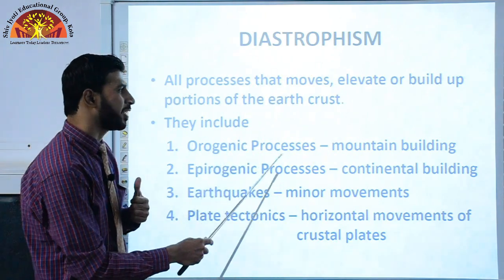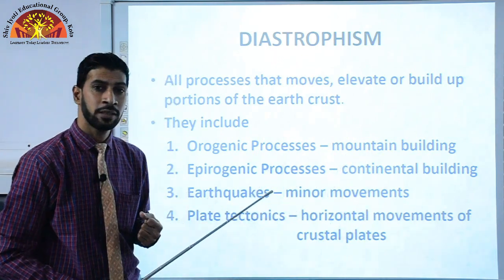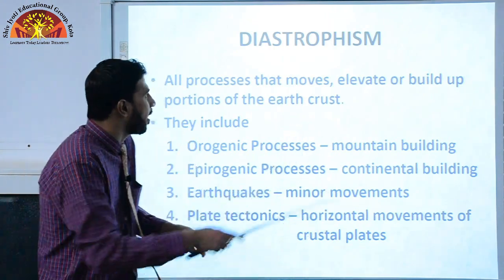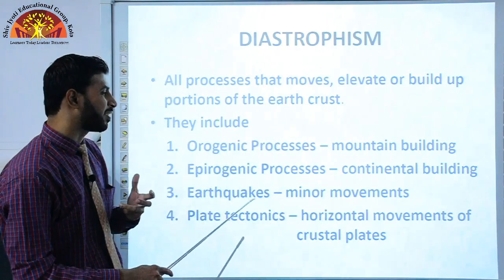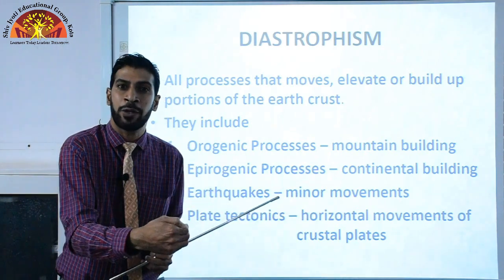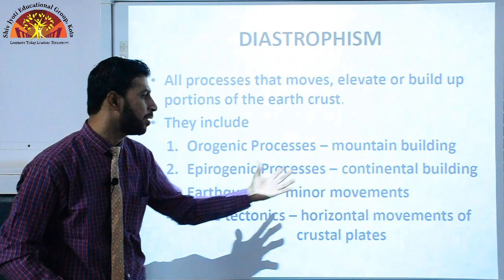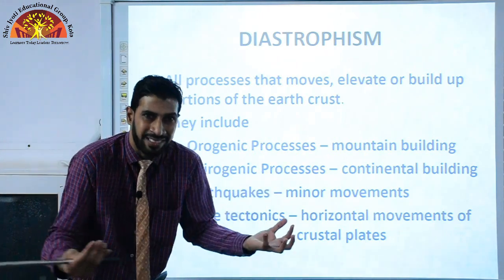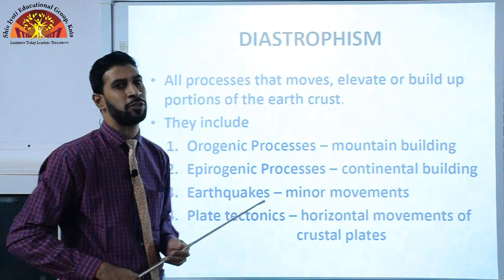Diastrophism includes orogenic processes — that is mountain building — and epeirogenic processes — that is continental building. Continents like Asia are formed through these processes. Earthquakes cause minor movements and also cause changes in the land. Plate tectonics involves the horizontal movement of crustal plates; when these continental plates shift, changes take place.